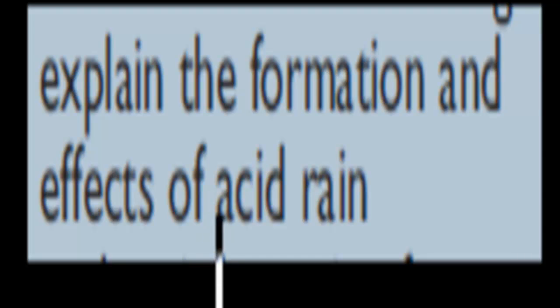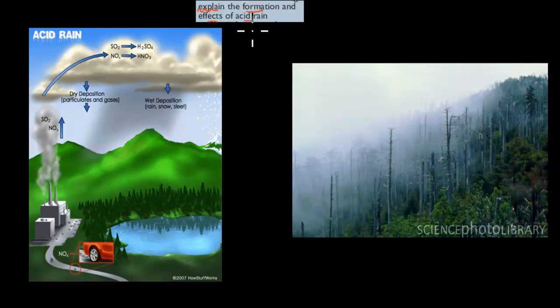Welcome back. In the last video, we talked about some of the evidence for the increase in concentration of sulfur dioxide and oxides of nitrogen. What we're going to do in this video is explain the formation and effects of acid rain. So the dot point says: explain the formation and the effects of acid rain. We have to go through how acid rain gets formed and what effect it has.